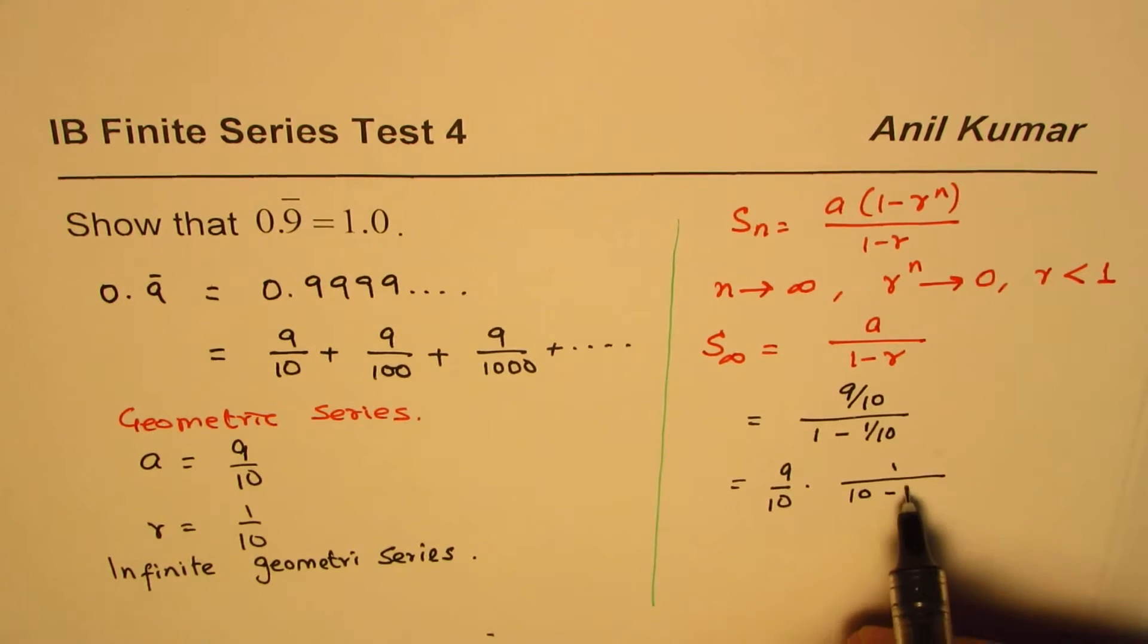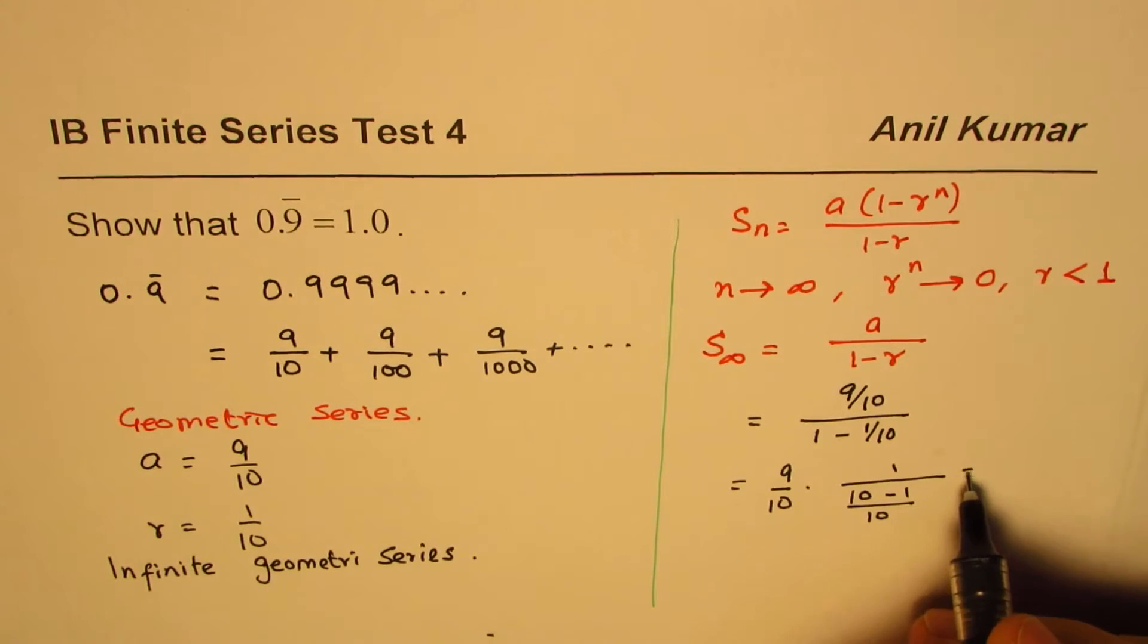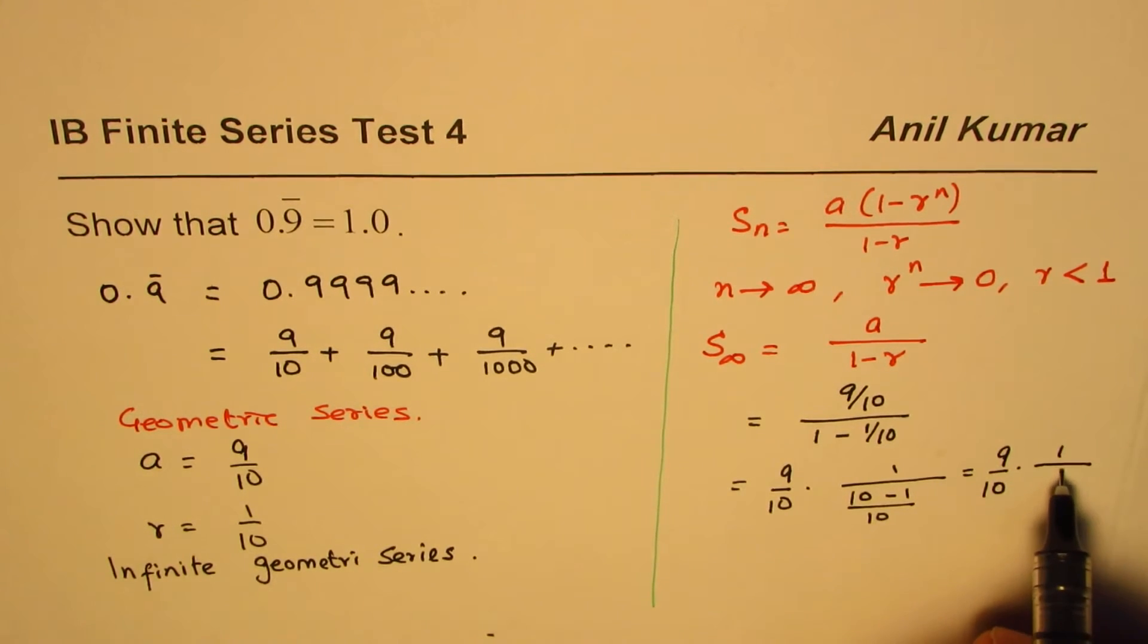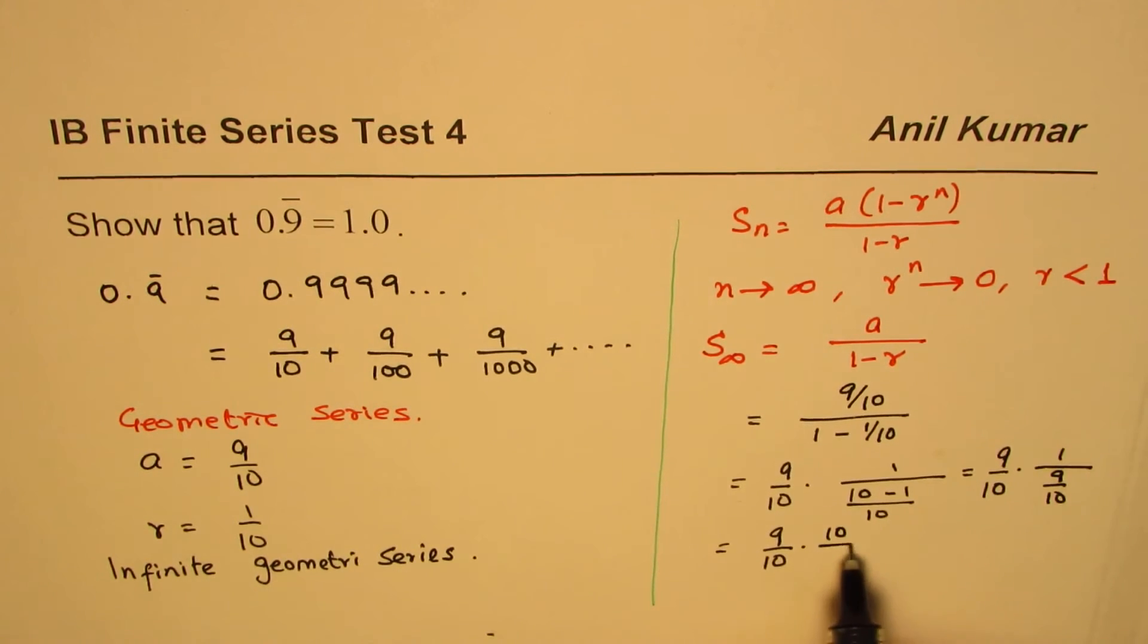I'm showing you the simple steps to do it. We have 9/10 times 1 over (10-1)/10, which is 9/10 divided by 9/10. Divided by this means times 10/9. Now 10 and 10 cancel, 9 and 9 cancel, and we are left with 1.